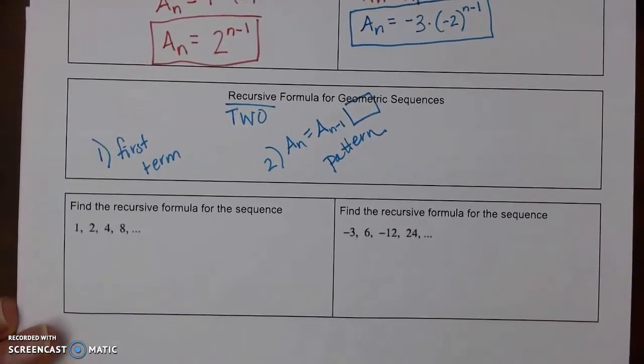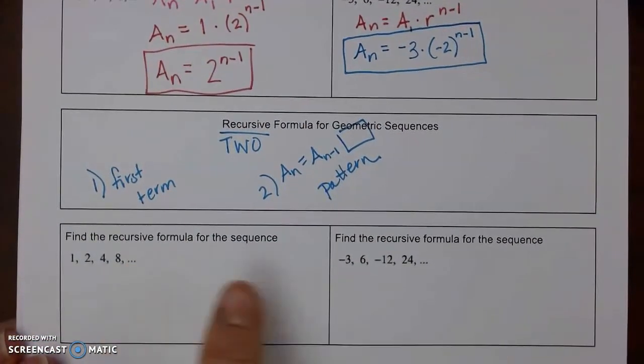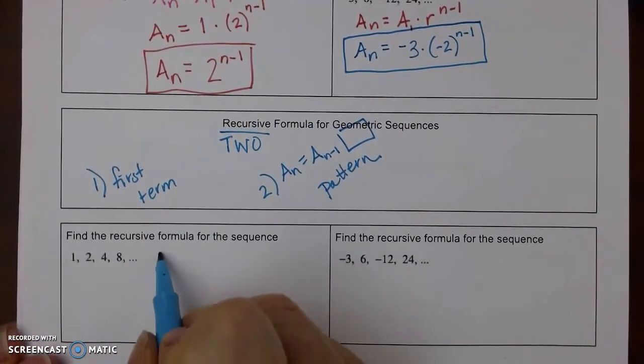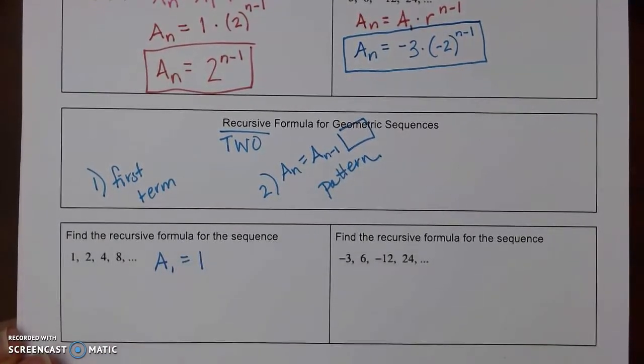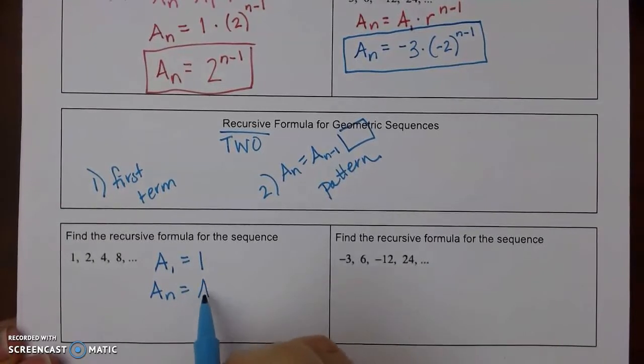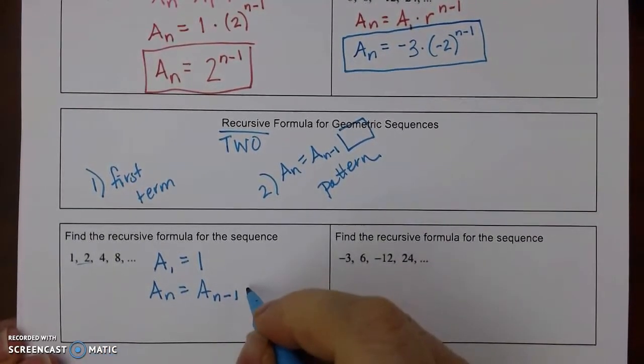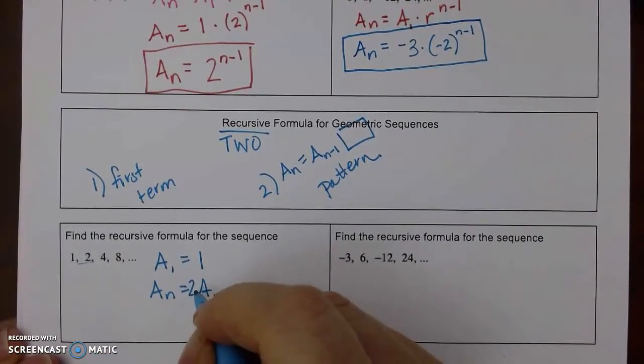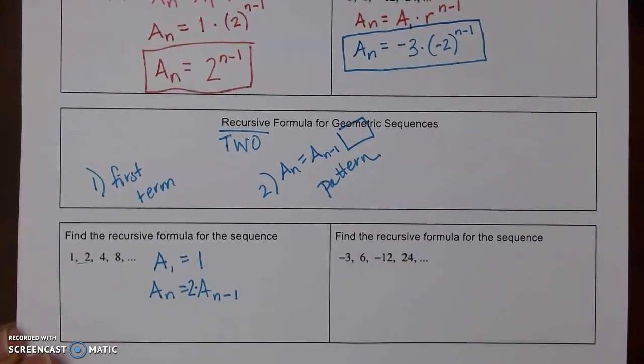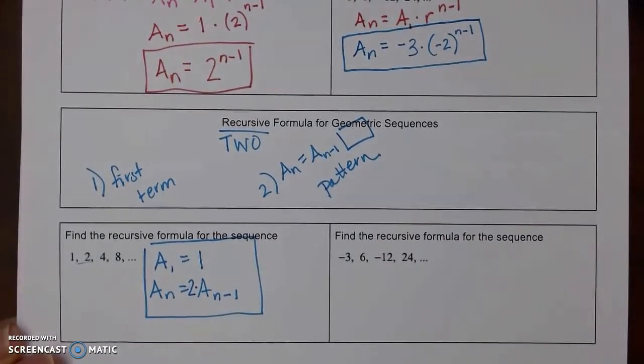Let's look at our same two examples. We wrote the explicit and let's compare it to the recursive. I have to state my first term. That's part of your answer. And my notation. Then our pattern was to multiply by 2. You can write this afterwards, but usually we write it in front. That's it. These are going to be a lot easier and less work.